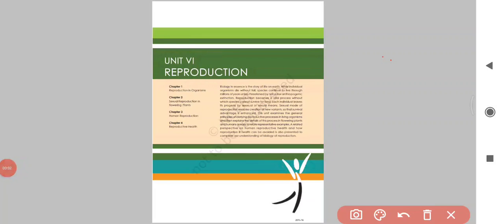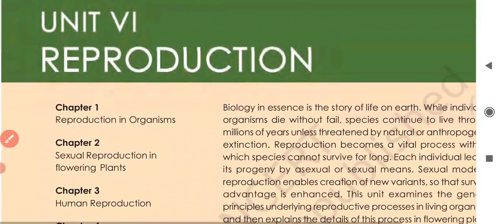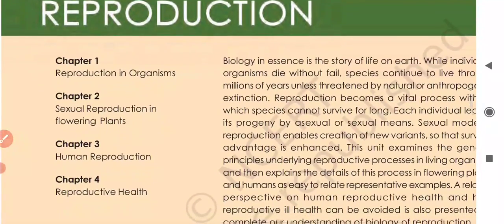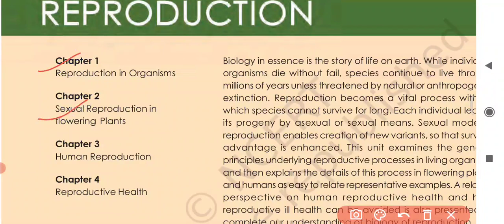Hello everyone, today we will do Unit 5 Reproduction. We will include Chapter 1, as you can see here. Unit 5 has 4 chapters. These are chapters in Unit 5: Reproduction in Organisms, Sexual Reproduction in Flowering Plants,